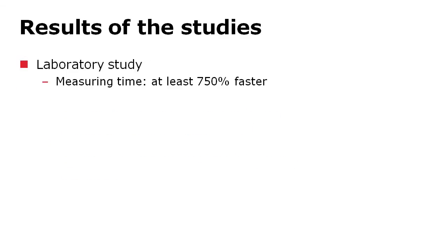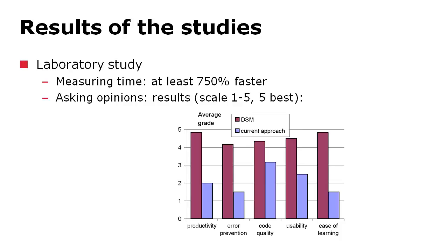The laboratory study showed that domain-specific modeling was at least 750% faster than the time developers used when coding these applications manually. They also asked for subjective opinions from developers. On a Likert scale of one to five — where five is the best — the productivity of the domain-specific modeling approach scored almost five: five of the six engineers rated it five and one rated it four. The manual programming approach scored much less.